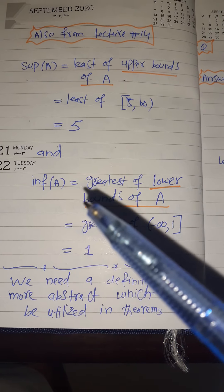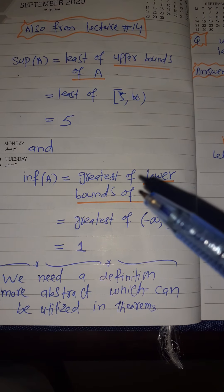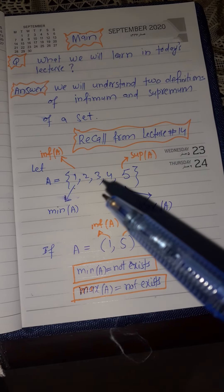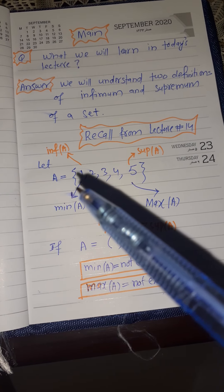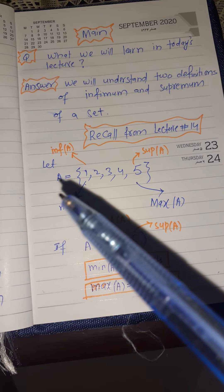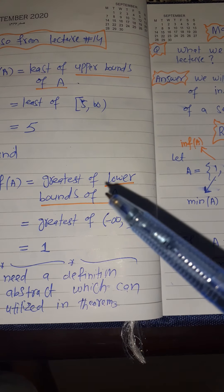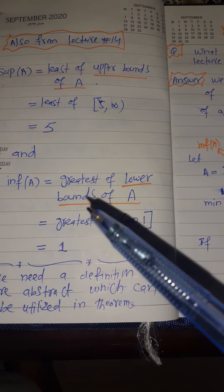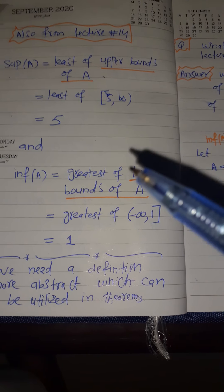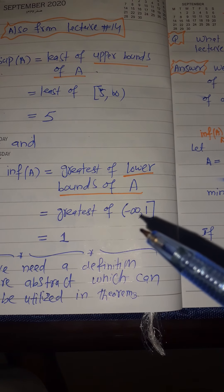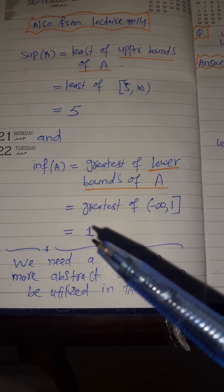Similarly, the infimum of a set is the greatest of the lower bounds of A. Lower bounds are numbers less than or equal to the elements of the set — for example, 1, 0, -1, -2, -3 are all lower bounds. The greatest among those lower bounds, which ranges from negative infinity to 1, is the infimum, which we calculated as 1 in the last lecture.